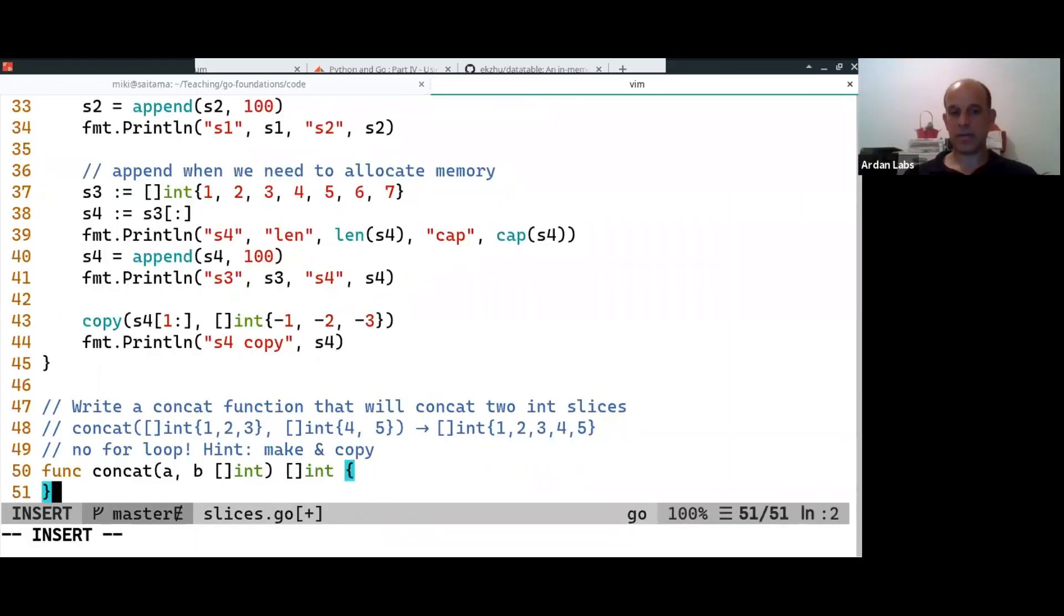So we want a function that concatenates two slices of two int slices. They get two int slices and return an int slice.